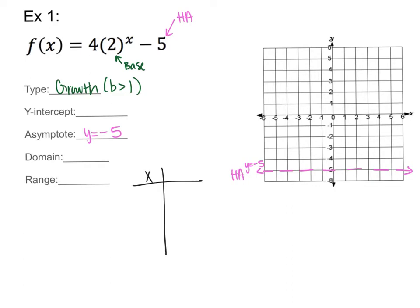Plugging in x = 0: 2 to the zero power is 1, so 4 times 1 is 4, minus 5 gives negative 1. So at x = 0, y = −1, which is right on the y-axis — that's also our y-intercept. I like to always plug in zero because you usually need the y-intercept anyway, so might as well include it in the chart.